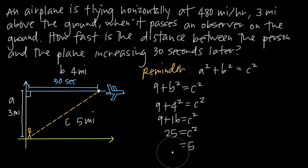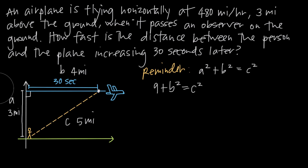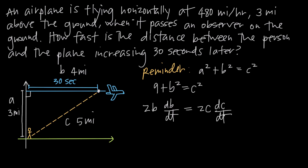We differentiate both sides of our equation 9 plus B squared equals C squared with respect to t. The derivative of 9, since it's a constant, is 0. The derivative of B squared is 2B, so we get 2B times dB/dt — the rate at which B is changing with respect to time. On the right hand side, the derivative of C squared is 2C multiplied by dC/dt — the rate at which C is changing with respect to time.